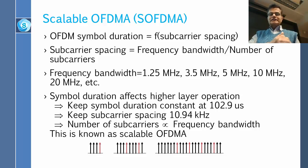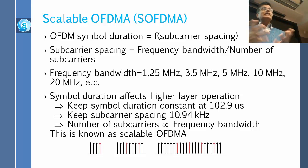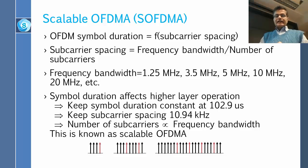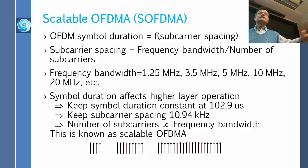Subcarrier spacing equals frequency bandwidth divided by number of subcarriers. Frequency bandwidth can be 1.25, 3.5, 5, 10, or 20 megahertz depending on the country. One method is to keep the symbol duration constant regardless of bandwidth — in LTE this is 102.9 microseconds, which corresponds to a spacing of 10.94 kilohertz. Then if you get 1.25 MHz you have fewer carriers; if you get twice as much bandwidth, you get twice as many carriers. The intercarrier spacing is fixed.